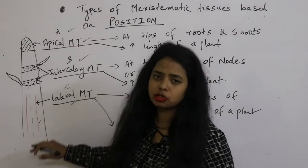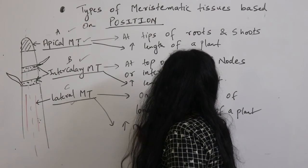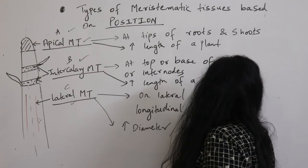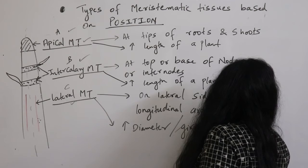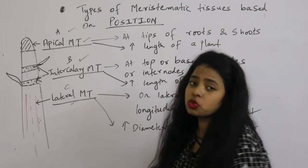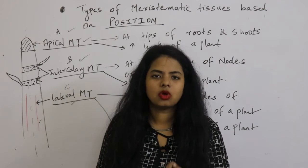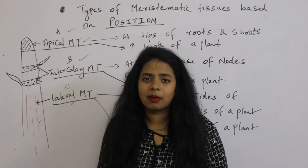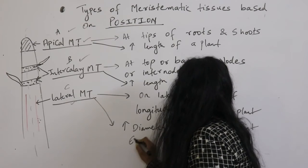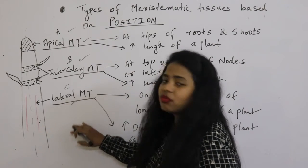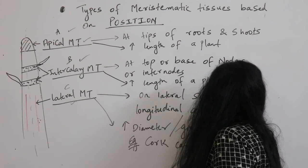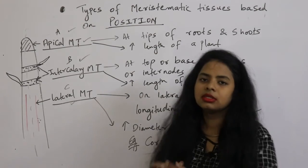The function of lateral meristematic tissue is to increase the diameter or girth of a plant. As we have seen in the previous video, cork cambium is one example of a tissue that helps in increasing the girth. There is also vascular cambium. So an example of lateral meristematic tissue is cork cambium, which divides and increases the girth of the plant.